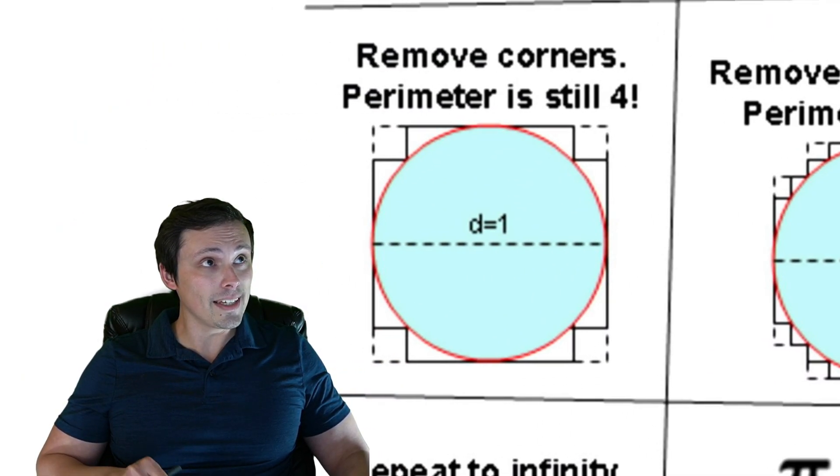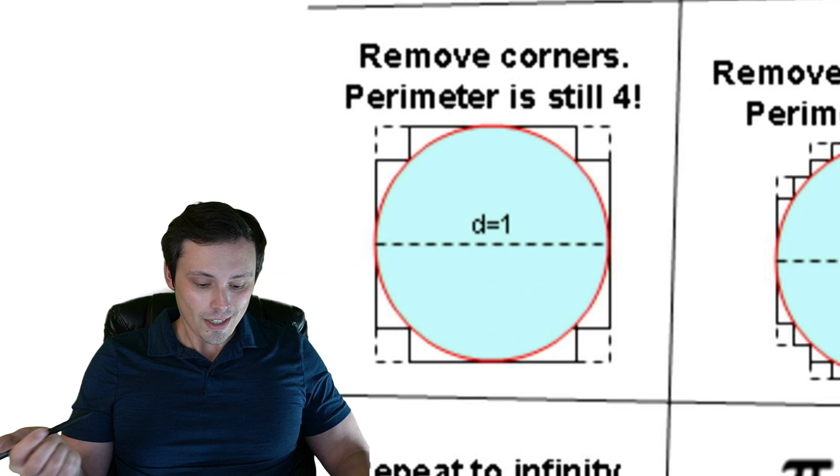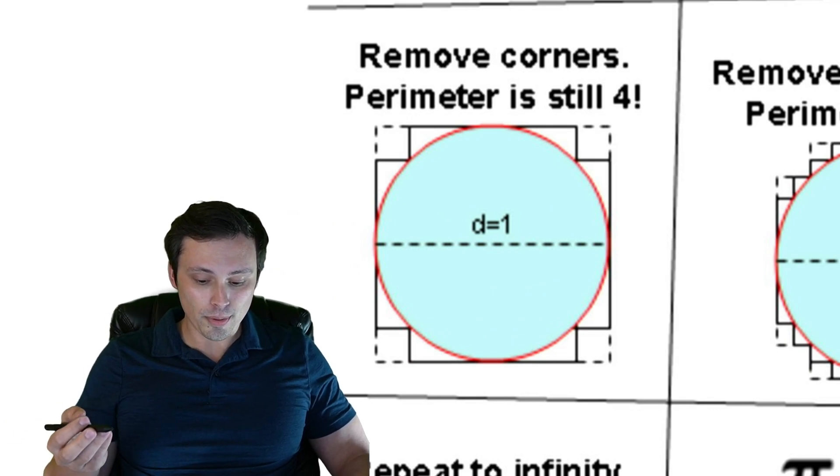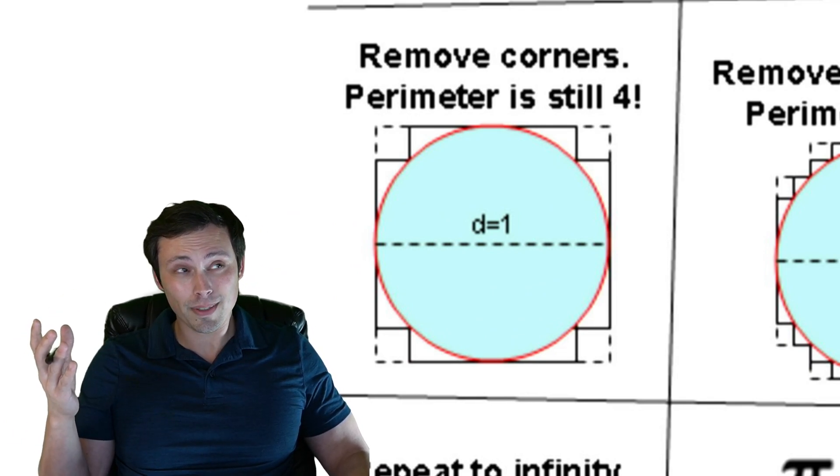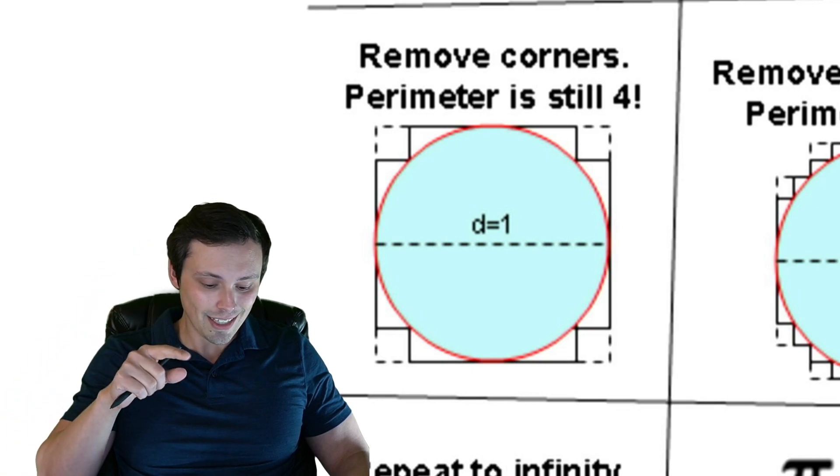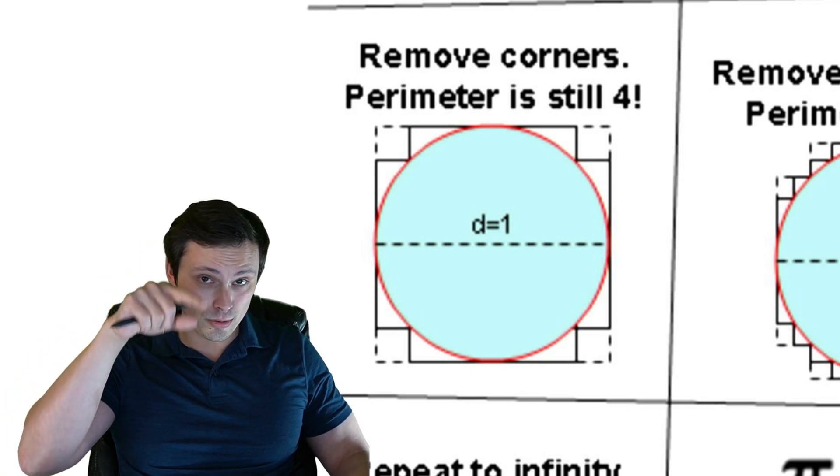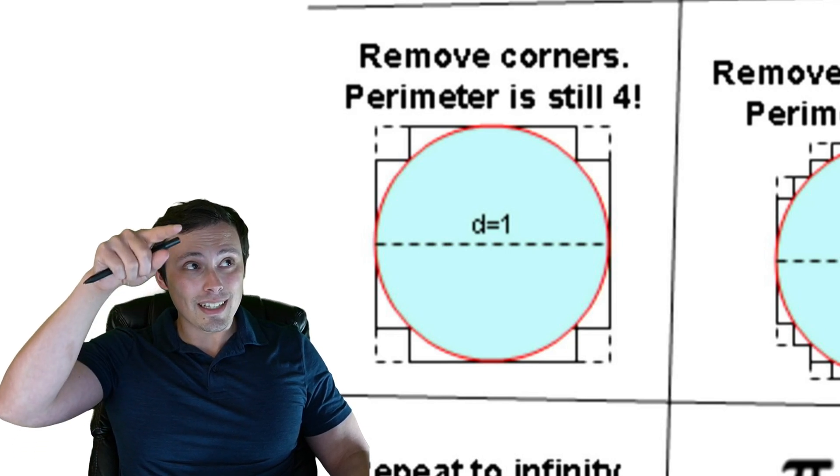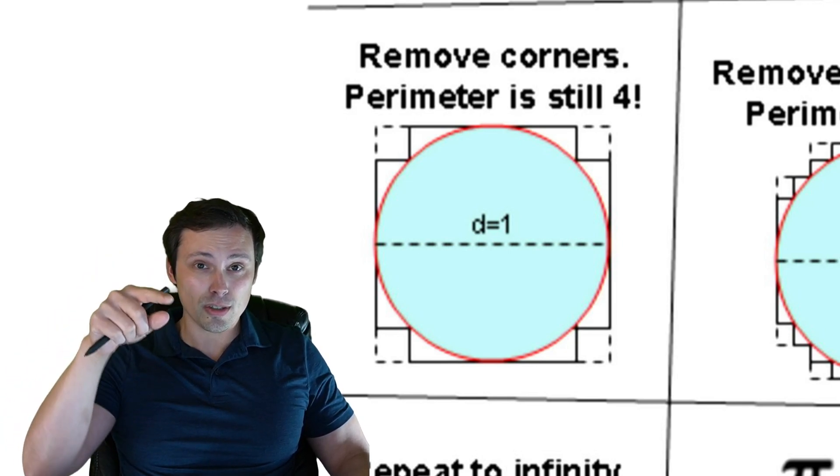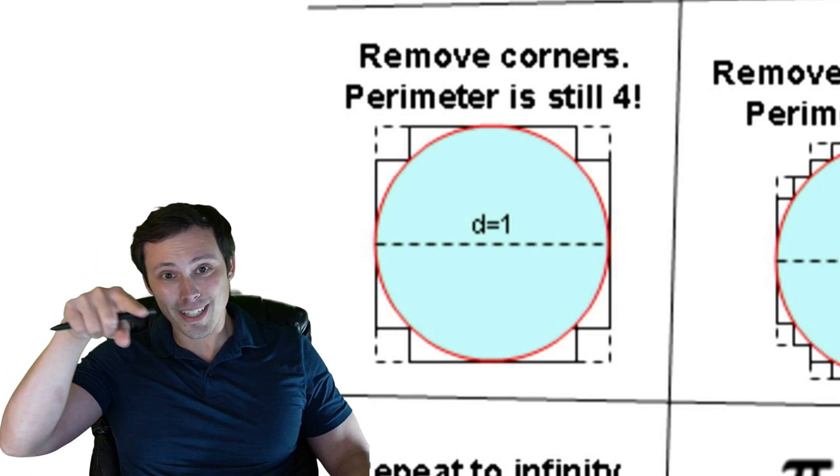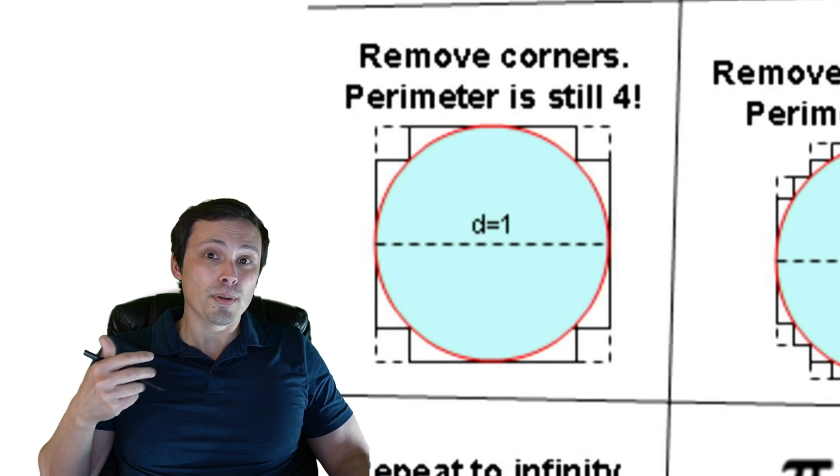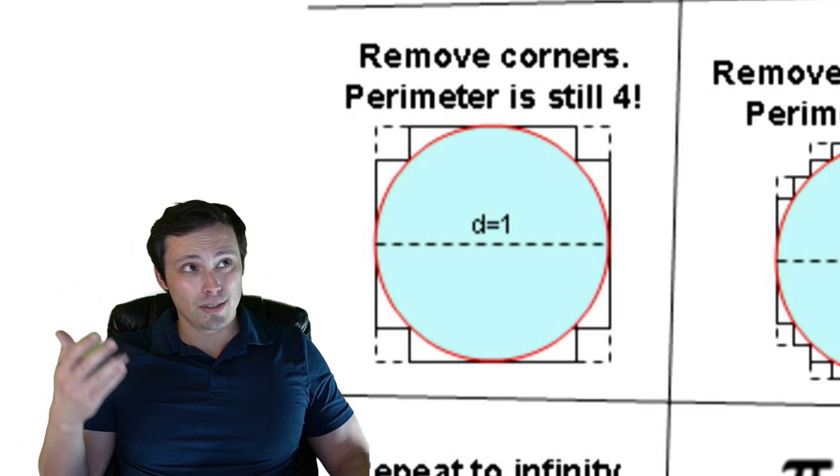Next we've got remove the corners. If you remove the corners, the perimeter is still 4. If you need a little explanation on that, think about the fact that the dashed lines that are being removed are the same length as the little inner cuts that they're making here. By making those cuts go in instead of out, the perimeter of the square—well, it's no longer a square—but the perimeter of the shape has not changed because those two pieces are equal.